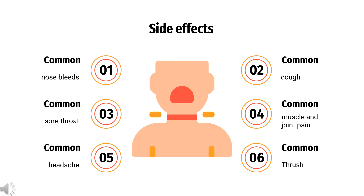Pharmacodynamics: Mometasone is a synthetic corticosteroid with an affinity for glucocorticoid receptors 22 times higher than that of dexamethasone. Mometasone furoate also has a lower affinity to mineralocorticoid receptors than natural corticosteroids, making it more selective in its action. Mometasone furoate diffuses across cell membranes to activate pathways responsible for reducing inflammation.